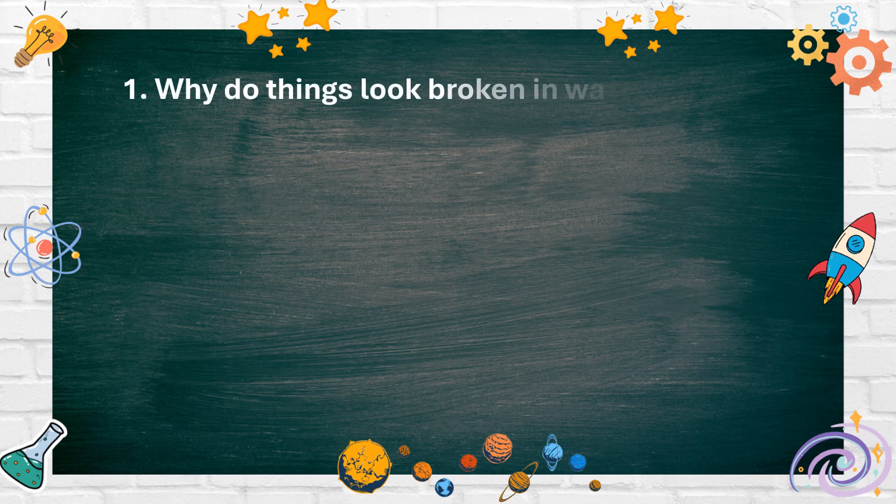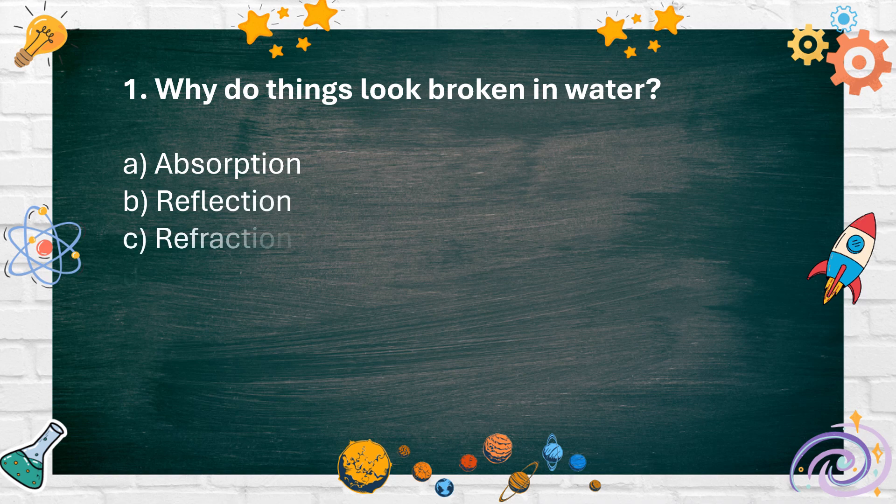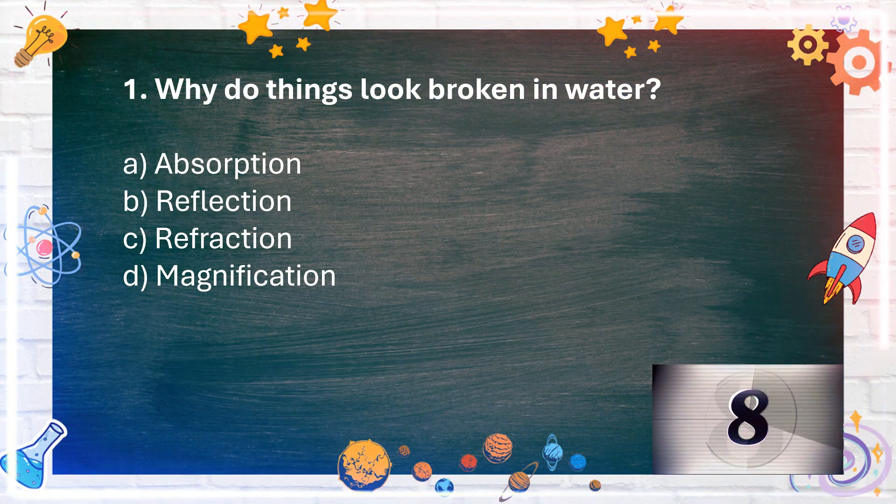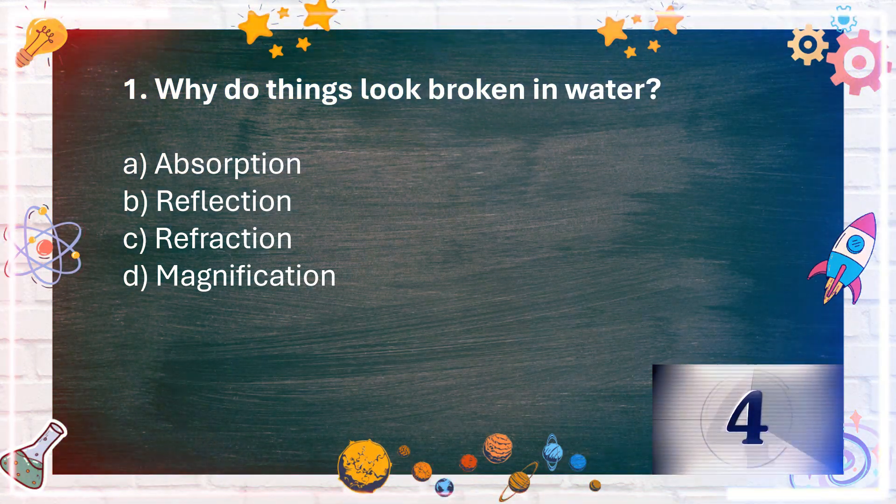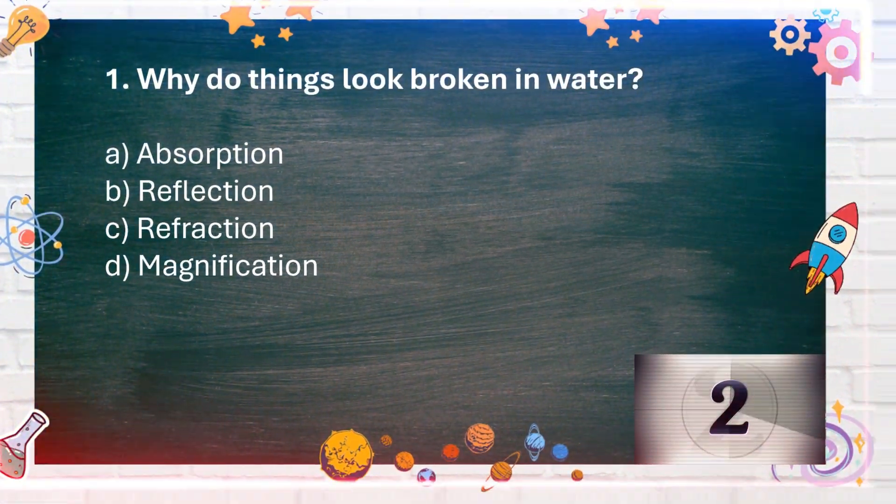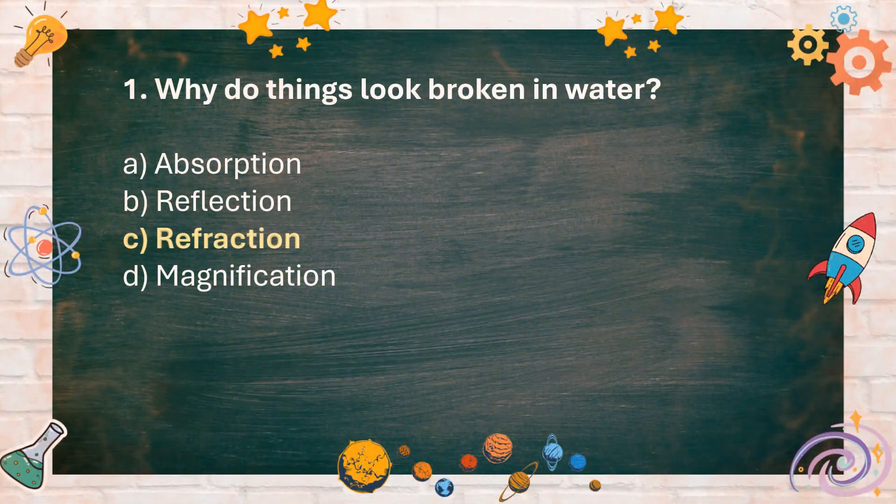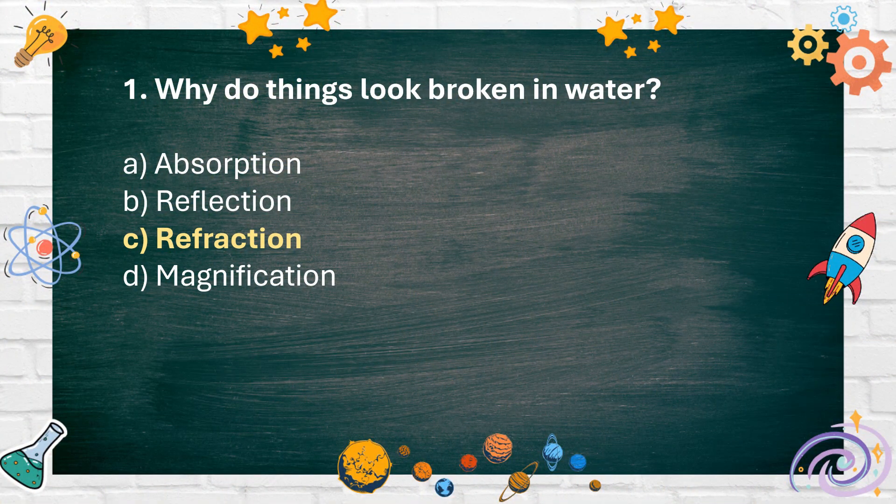Number 1. Why do things look broken in water? A. Absorption B. Reflection C. Refraction D. Magnification. The answer is C. Refraction.